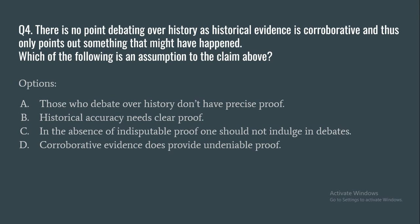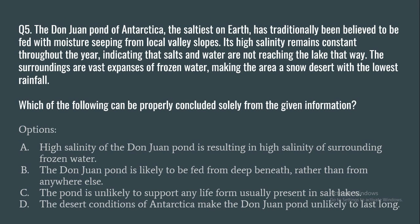Question 4: 'There is no point debating our history as historical evidence is collaborative and thus only points out something that might have happened.' Which of the following is an assumption underlying this claim? Options: (a) those who debate history don't have precise proof, (b) historical accuracy needs clear proof, (c) in the absence of indisputable proof one should not indulge in debates, (d) corroborative evidence does provide undeniable proof.